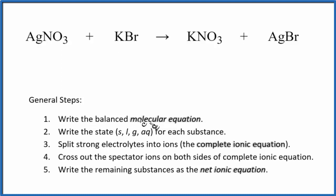Next we write the states for each substance. If you know your solubility rules, nitrates are very soluble, so we write aqueous. This will dissolve in water and split apart into its ions. Potassium bromide—potassium compounds are very soluble—write aqueous.